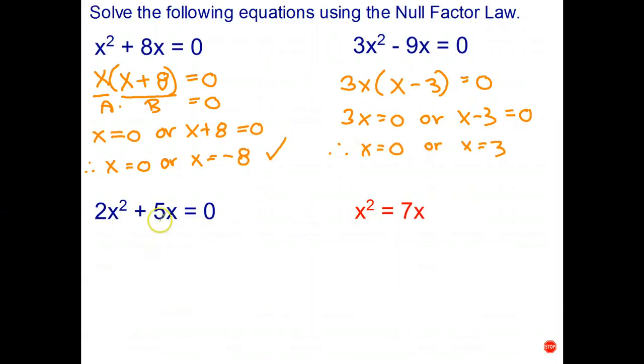Okay, a similar one here. The only common factor in these two terms is x, and that leaves 2x plus 5 in the brackets. So therefore x equals 0 or 2x plus 5 equals 0.